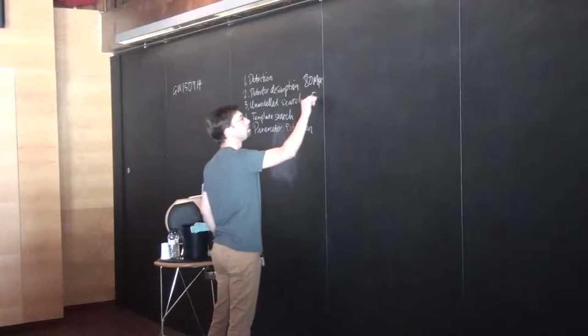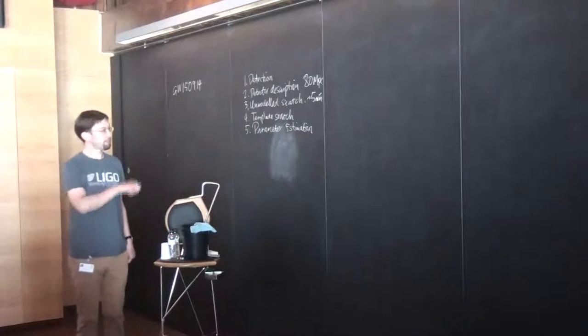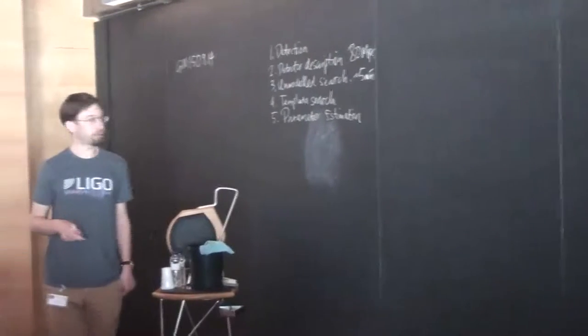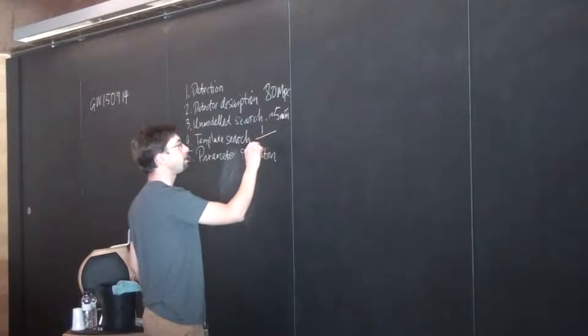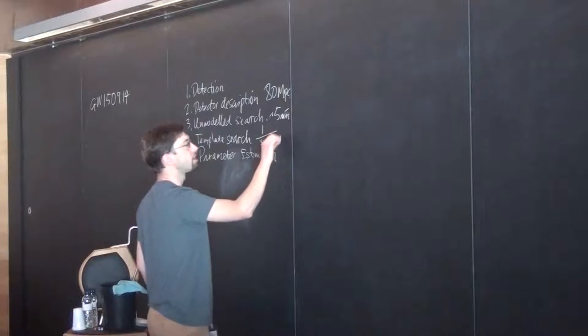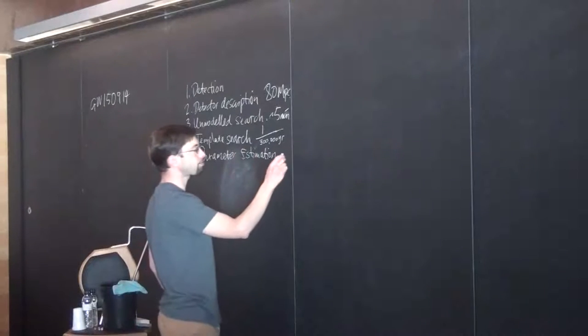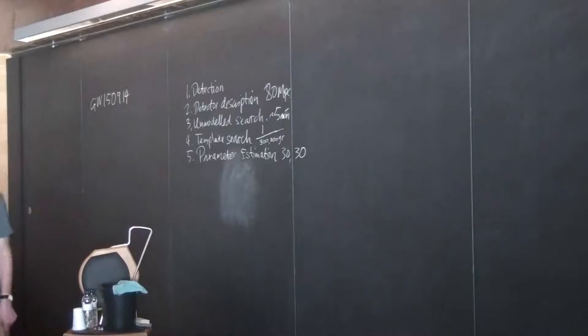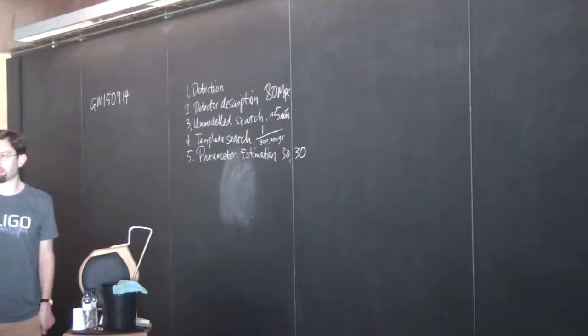Unmodeled search—the number there is five minutes. That's the approximate amount of time it took between the arrival of the signal in the detectors to when it produced an alert to a human being. One in, I think it's something like 300,000 years, is the false alarm rate from this template-based search. Parameter estimation: The two masses of the two black holes are to one significant figure 30, and it could be 35 and 25, but we have a plus or minus 10% error on that, which is actually pretty good.